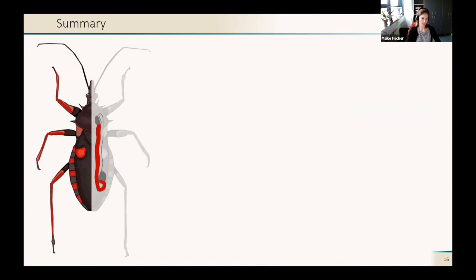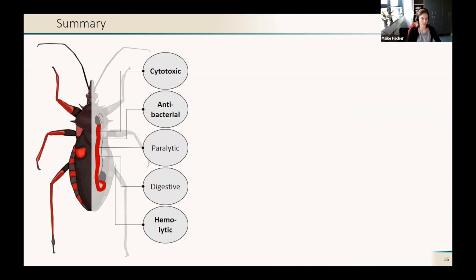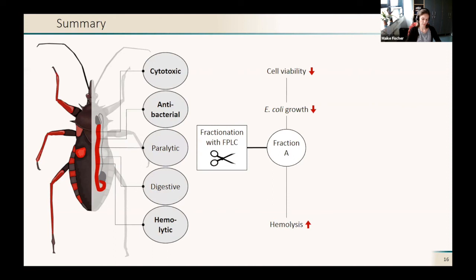To summarize this, I analyzed the venom components or the toxic venom components of this large gland part, the PMG of the African assassin bug Psythala horida, because it has cytotoxic, antibacterial, paralytic, digestive, and hemolytic effects.